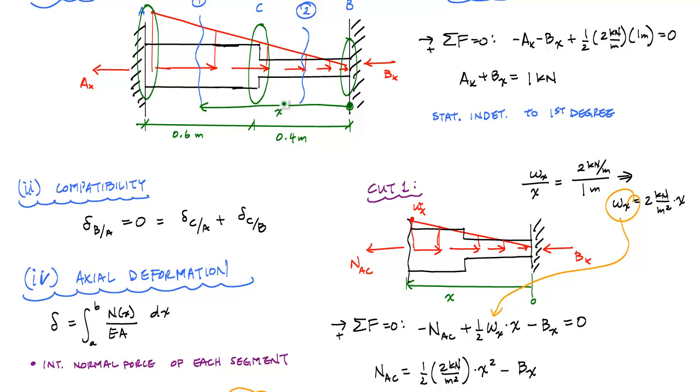And that first cut applies from, if this is 0, this is 0.4. And this point would be 1. And so the bounds of segment CA are from 0.4 to 1. Whereas for my second cut, x was to here, this line right here. This was x, and that would go from 0 to 0.4 for segment BC.